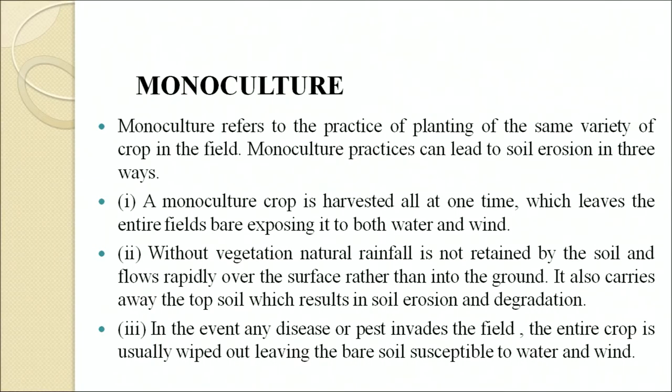Monoculture refers to the practice of planting the same variety of crops in a field. It can lead to soil erosion in three ways: a monoculture crop is harvested all at one time, leaving the entire field bare and exposed to both water and wind; without vegetation, rainfall is not retained by the soil and flows rapidly over the surface causing erosion; and if any disease or pest invades the field, the entire crop is wiped out, leaving bare soil susceptible to water and wind.